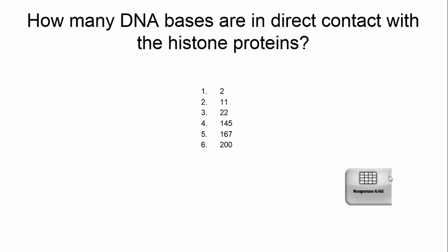Quick question: how many bases of DNA are in direct contact with a histone protein? If I give you the diameter of a nucleosome core and the dimensions of a double helix — 10 base pairs in one turn — you can figure it out by calculating the circumference. You should come up with approximately 145 base pairs. It's good to have these dimensions in mind.